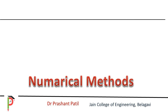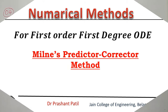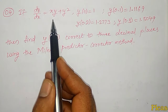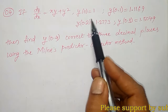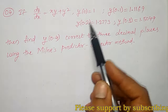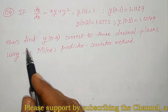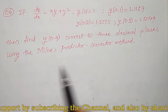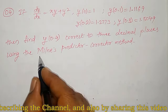In this video, one more simple example on Milne's predictor-corrector method I am going to solve. That is, if dy/dx equal to xy plus y squared and four initial conditions are given: y(0) equal to 1, y(0.1), y(0.2) and y(0.3) conditions are given. Then find y(0.4), corrected to three decimal places, using Milne's predictor-corrector method.